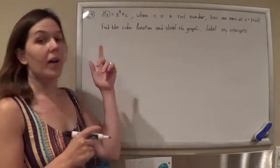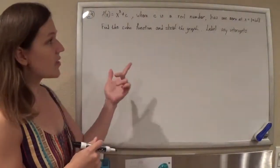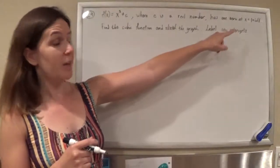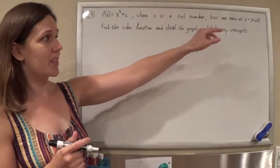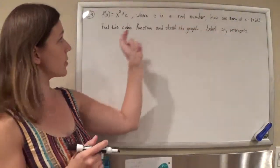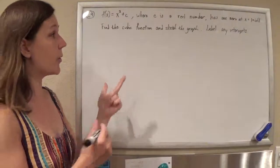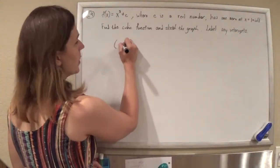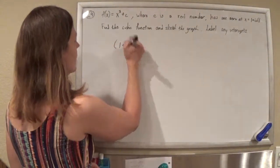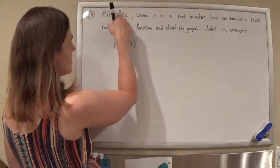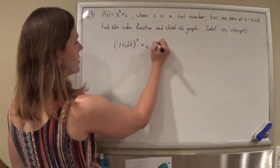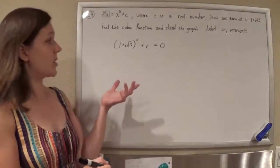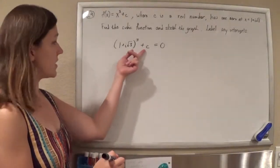So this one, not so bad. We know this function has a zero at 1+i√3, so by definition that should make this function equal 0. So we're just going to put in 1+i√3 for x, cube it, add c, and that should equal 0. Then we can just figure out what c is.